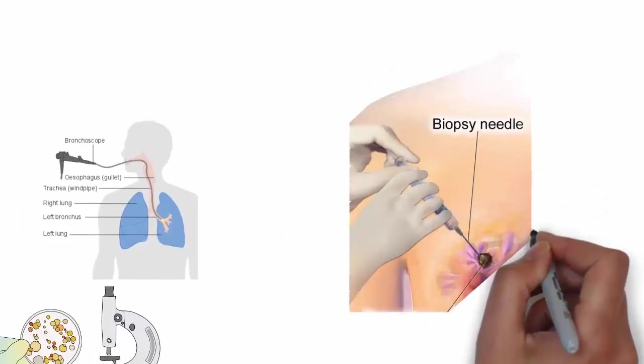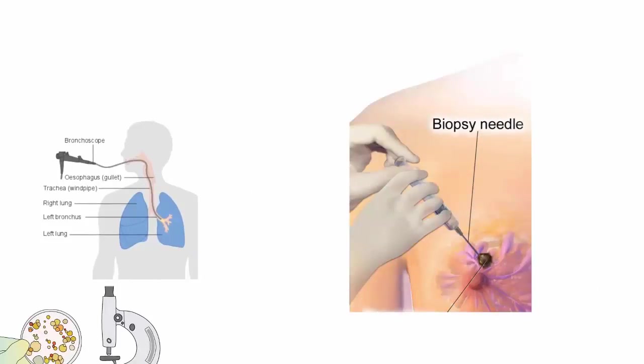Next is needle biopsy. Sometimes, lung tumor is peripherally positioned in the lung and is not accessible by bronchoscopy. In this case, needle biopsy is used. With the help of a syringe, cancer cells are suctioned and are examined under the microscope.